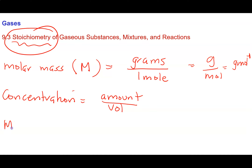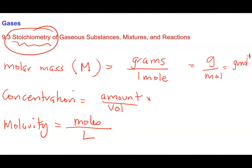It's common to give concentrations in chemistry in what we call molarity. Molarity is the moles — that's our amount — divided by the litres. So we have so many moles of a substance per litre of solution. Molarity has units of moles per litre, which can be written as moles litres to the minus one.